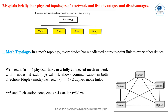Second question: Explain briefly the four physical topologies of a network and list the advantages and disadvantages of each. First one is Mesh Topology. In Mesh Topology, every device has a dedicated point-to-point link to every other device. If N nodes are present, we require N×(N-1) physical links in a fully connected mesh network.